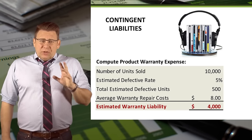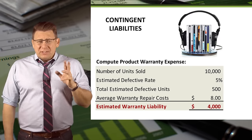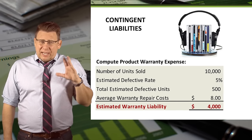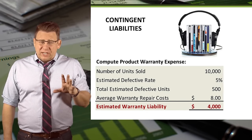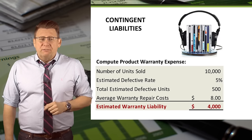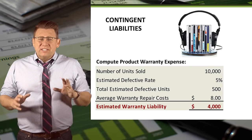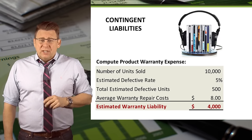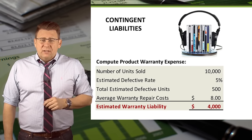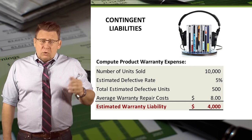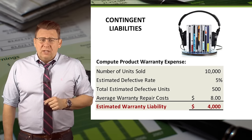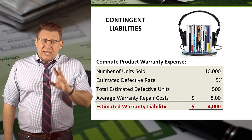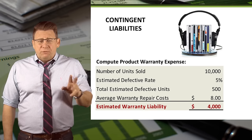So let's compute the warranty expense. Remember, this is an estimated amount. We take 10,000 CDs times 5%, which is our estimated defective rate. This gives us an estimate that 500 CDs will need to be replaced due to defect. The cost to repair or replace is $8 per CD, so our estimated expense and liability is $4,000.